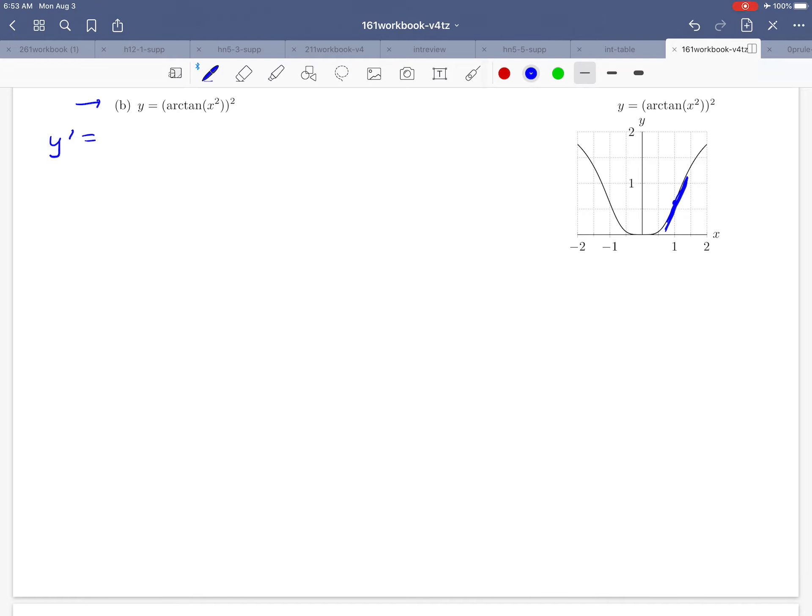Looking at the function, we've got arctangent of x squared all squared. We need to decide what derivative formulas might apply. Notice we've got an inside and an outside function, so this is a typical chain rule situation. We might start by thinking of u as being arctangent of x squared.